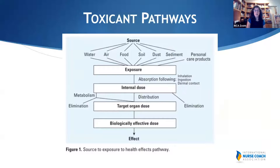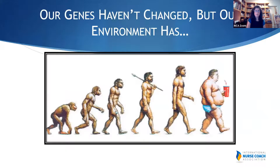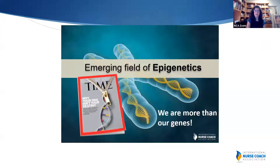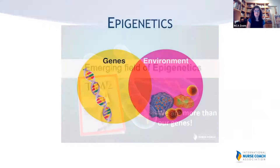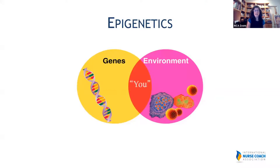Toxicant pathways include water, air, food, soil, dust, sediment, and personal care products. We're looking not only at the exposure but our ability to excrete and eliminate the toxins we take in. Our genes haven't changed, but our environment has — whether it be fast foods or other chemical exposures. The emerging field of epigenetics tells us that our genes are not our destiny; we have the capacity to influence how our genes express themselves. We have our genes, we have the environment, and we have the phenotype — and each of us is unique.